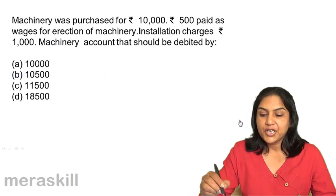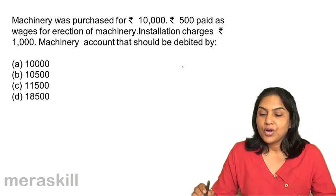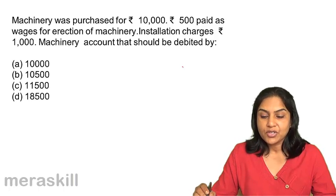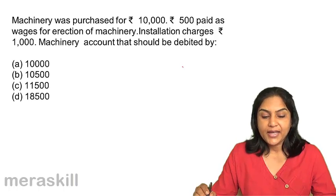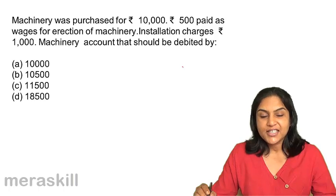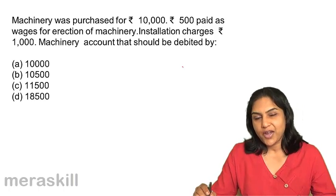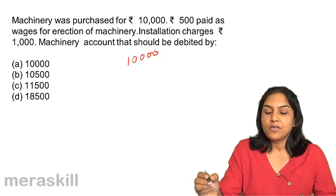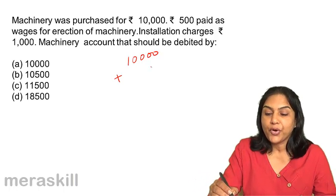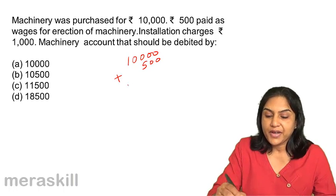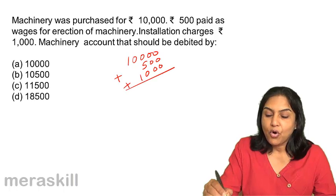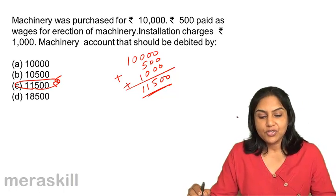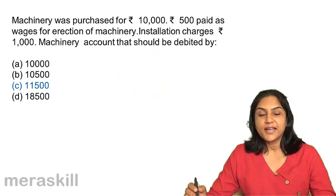Machinery was purchased for 10,000. 500 was paid as wages for erection of machinery. Installation charges were 1,000. Machinery account should be debited by A: 10,000; B: 10,500; C: 11,500; or D: 18,500. All costs of purchase of machinery up to the point that it starts functioning should be included — so 10,000 plus 500 plus 1,000. The correct answer is C: 11,500.